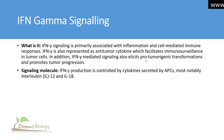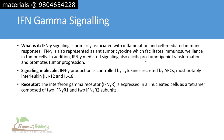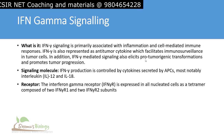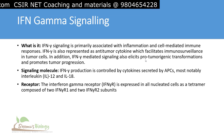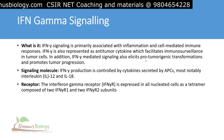The signaling molecule for interferon gamma is interferon gamma itself. Production is controlled by cytokines secreted by APCs or antigen-presenting cells, most notably interleukin-12 and interleukin-18. The receptor is interferon gamma receptor or IFN gamma-R, which is expressed in all nucleated cells as a tetramer composed of two interferon gamma-R1 and two interferon gamma-R2 subunits.